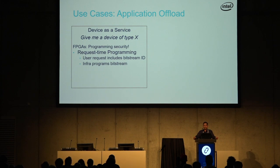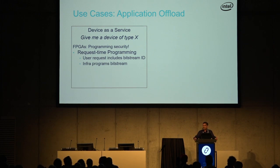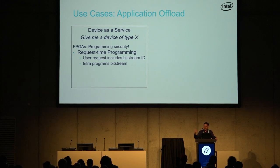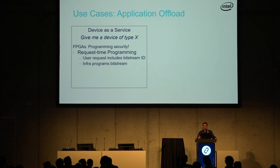One is what I call request-time programming: when you make a request for a VM with 16 vCPUs, 128 GB RAM, etc., you also ask for an FPGA with a particular bitstream ID attached. These bitstreams could be residing in Glance, and the infrastructure does the programming for you, as opposed to the VM doing it itself. So there is an intermediary — your OpenStack infrastructure — which could validate the bitstream in some form. It's at least possible to inject some policies and do validation.